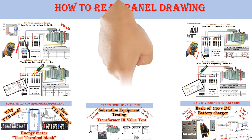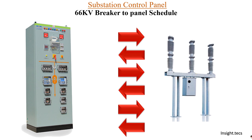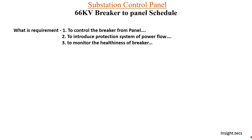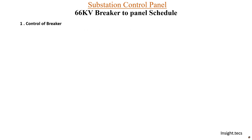As we have seen in part 1, the schedule making process is a two-way communication — we have to do wiring at both ends, for the breaker and for the control panel. There are mainly two parts of the wiring from control panel to breaker: first is for the control of the breaker, and second is to monitor the healthiness of the breaker.